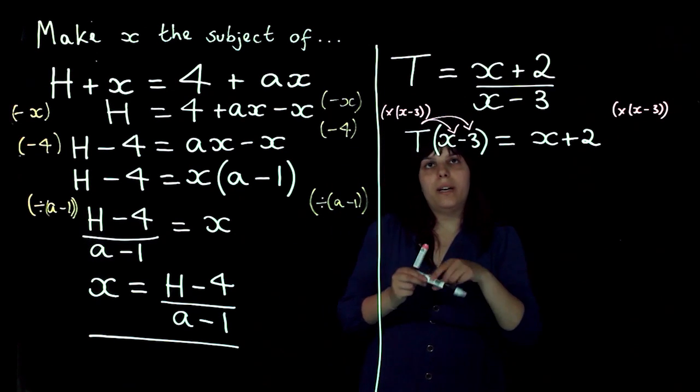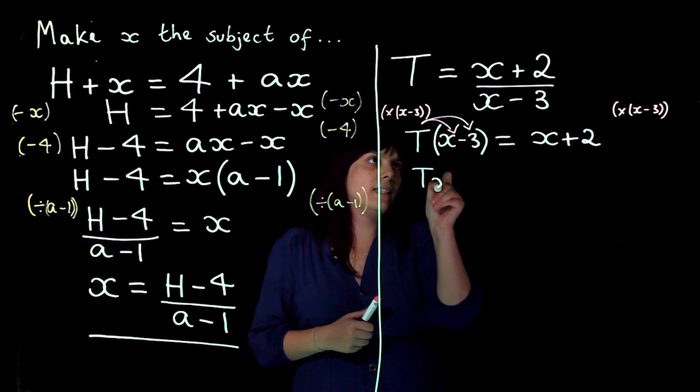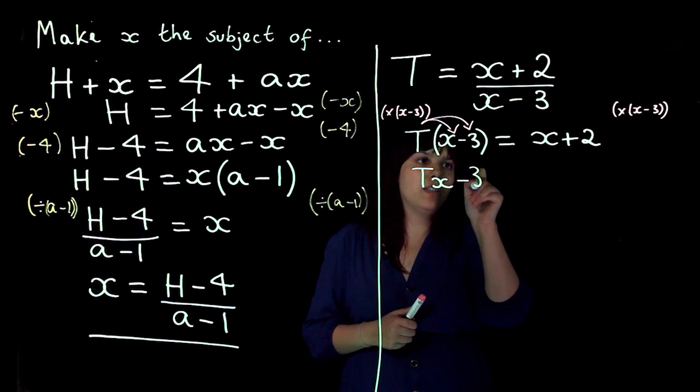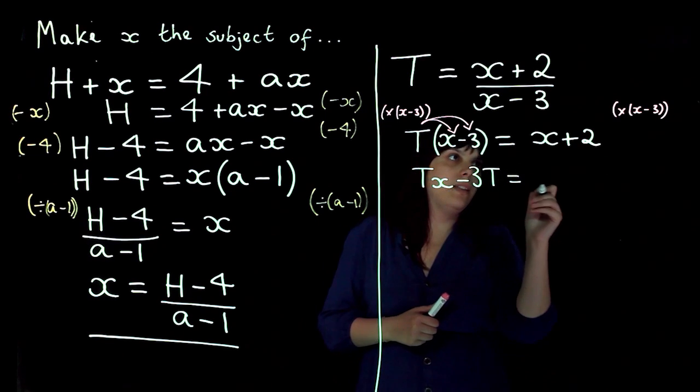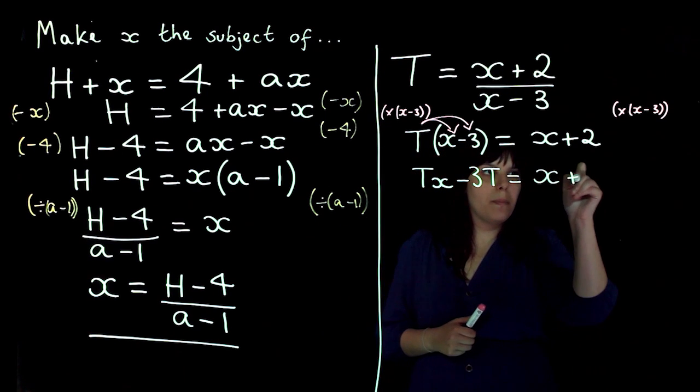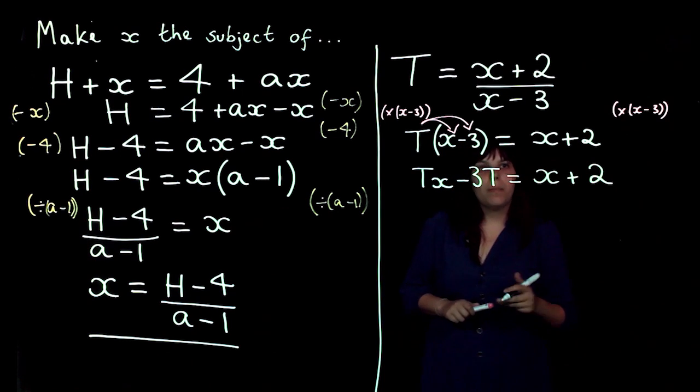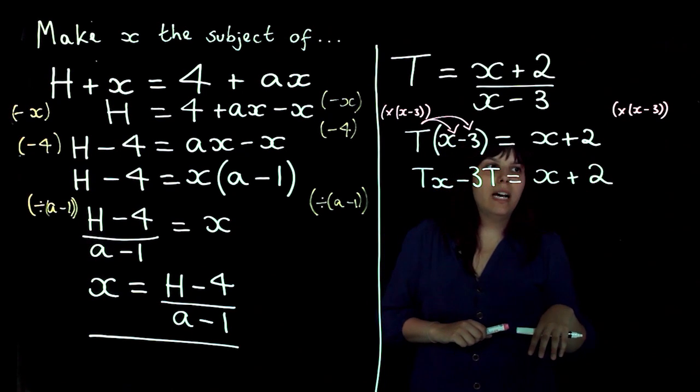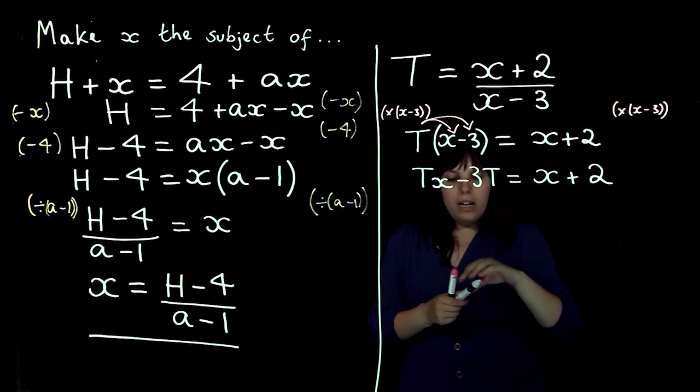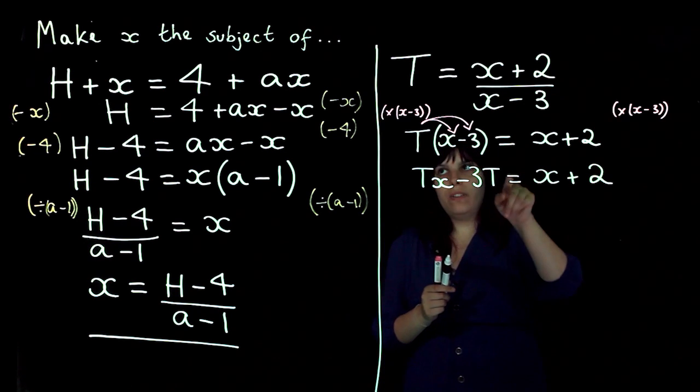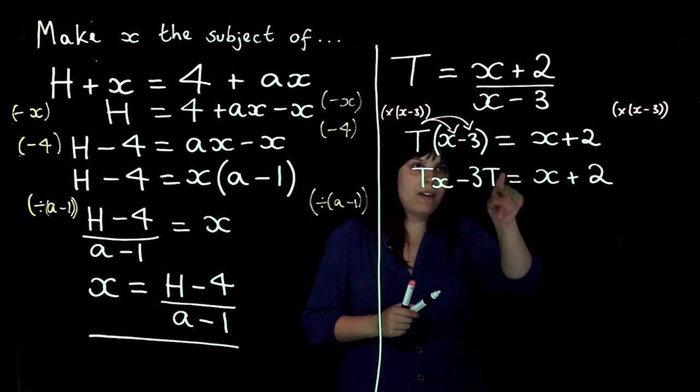So I end up with t times x is tx and t times minus 3 is going to be minus 3t and that equals x plus 2. I'm then going to rearrange it because I want to get my x's on one side and my other things on the other. So let's this time get rid of this minus 3t first.